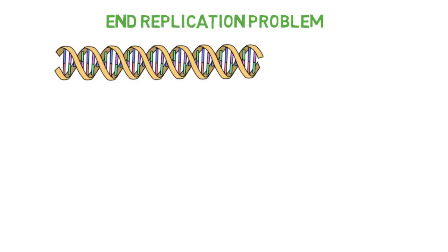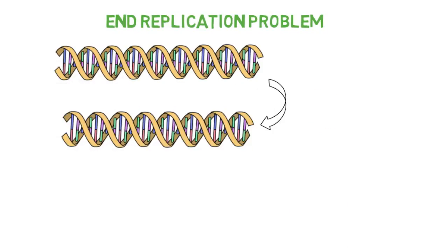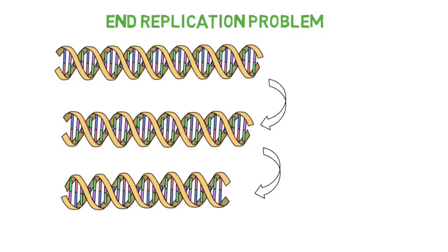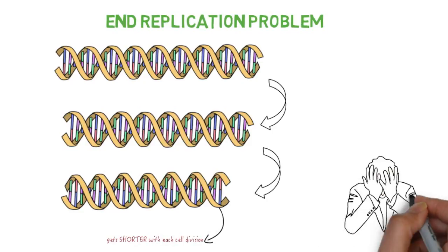Let's dive into why we need these telomeres in the first place, the great end replication problem. When DNA gets replicated, it gets a little bit shorter and shorter each time. If the DNA loss each time was important genes that coded for the proteins in your body, well, it would be a disaster.